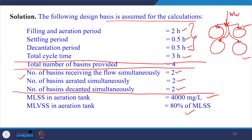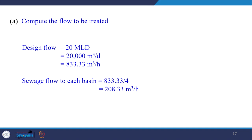Computing the flow to be treated: 20 MLD = 20,000 m³/day = 833.33 m³/hour. Since we have 4 basins, sewage flow to each basin = 833.33 / 4 ≈ 208.33 m³/hour.